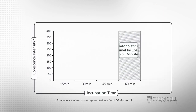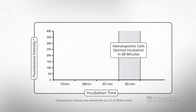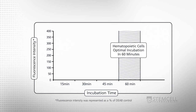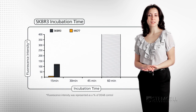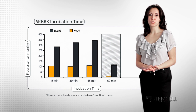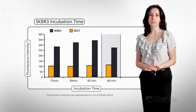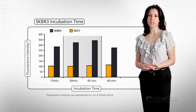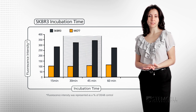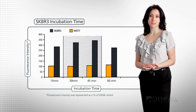The incubation time with ALDEFLOR is also very important for detecting ALDH activity. For hematopoietic cells, the recommended incubation time is up to 1 hour at 37 degrees Celsius. For SKBR3 mammary cells, optimal results were achieved with cells incubated for only 30 to 45 minutes. Incubation for 1 hour actually resulted in lower fluorescence intensity.